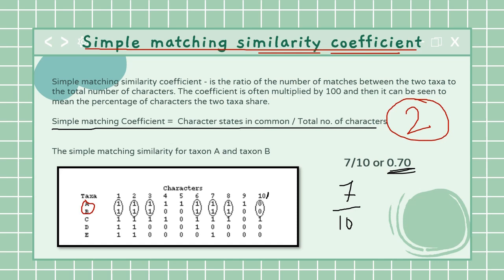Or you can also make it into a percentage by multiplying this number by 100, so you are going to get 70 percent similarity existing between taxa A and taxa B. Similarly this particular exercise can be constructed and done between A and E, B and C, D and E, C and E, etc.